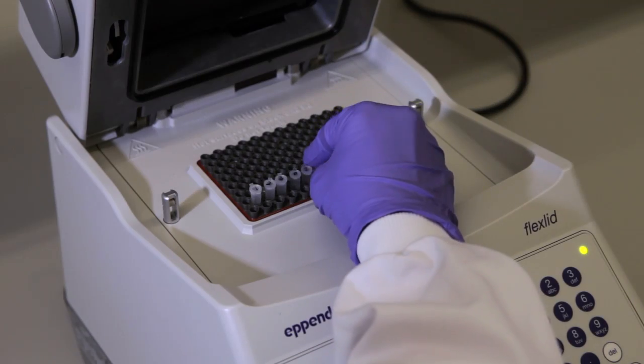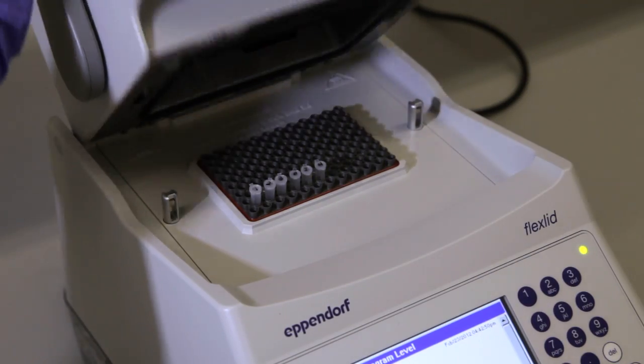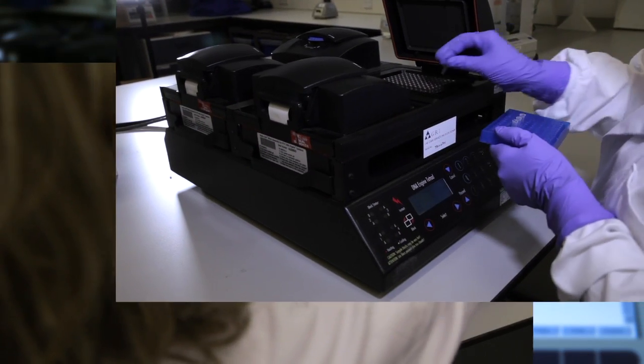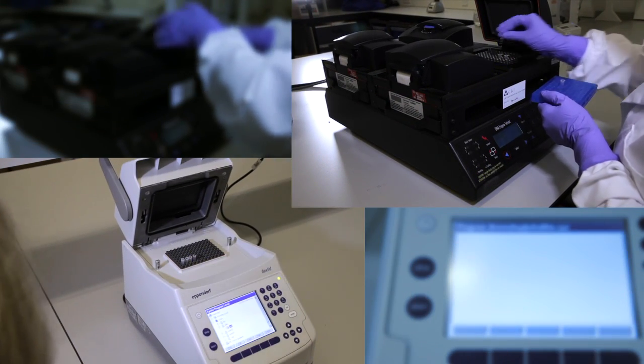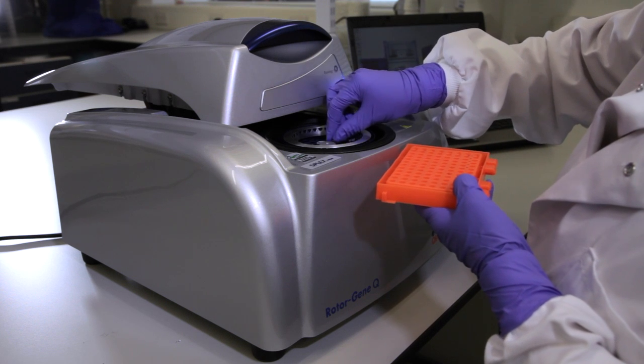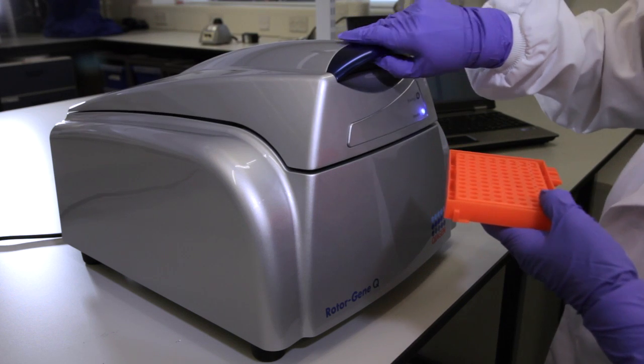Place the tubes into the instrument and start the cycling. There are lots of different instruments you can use. Today we've used a block based instrument. Also available are real time instruments that tend to be faster than block based ones, and measure fluorescence in real time as PCR products are generated.